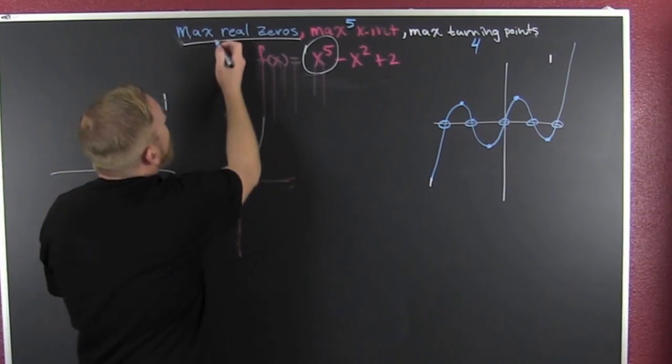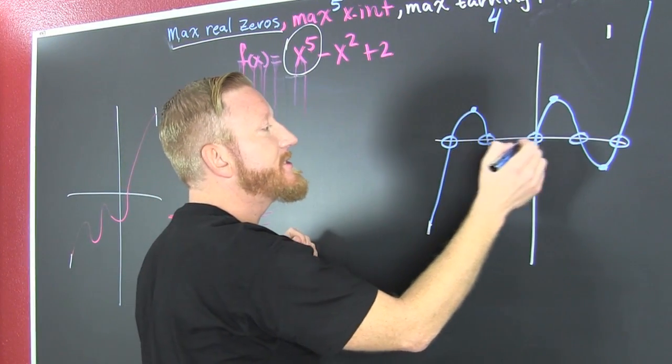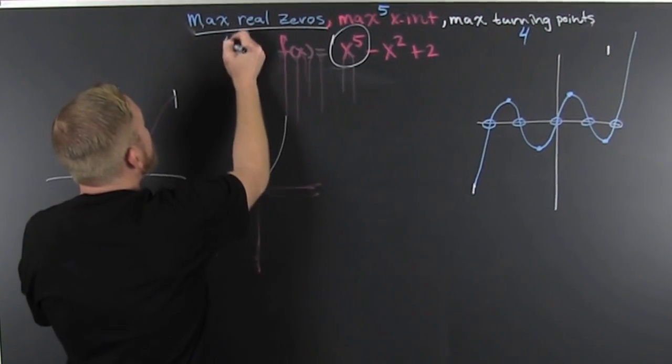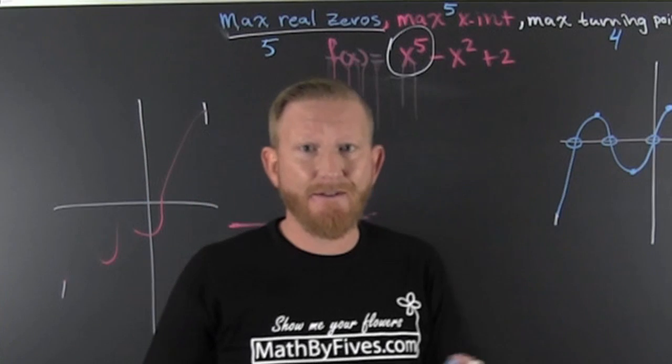But how many real zeros? Real zeros happen when the graph crosses the x-axis. So the maximum real zeros is five, and I think I'm done with this vid.